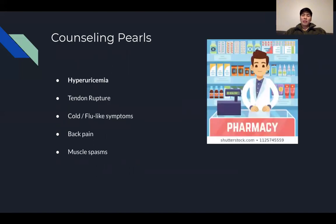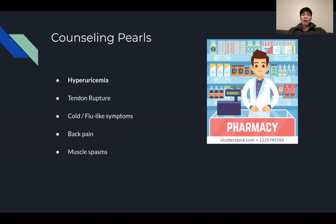As pharmacists, we need to counsel our patients on this medication. It's important to tell them it's adjunct therapy and that some side effects may occur. Hyperuricemia has been reported, so patients experiencing gout issues may not be the best candidates for this agent. There are very rare cases of tendon rupture, and some people experience cold and flu symptoms, back pain, and muscle spasms. Currently, Esperion Therapeutics is undergoing clinical trials to see whether Nexletol adjunct therapy provides cardiovascular benefit.